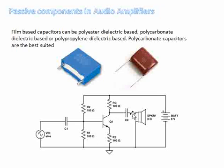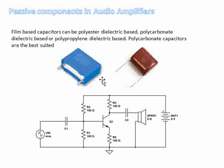A simple reason why ceramic capacitors are not used is because they vary their capacitance over voltage, which is not a desirable effect. That is why we see film capacitors used in audio amplifiers for coupling. Especially polycarbonate capacitors suit best when it comes to coupling caps used in audio amplifiers. These are very important points to consider while designing an audio amplifier circuit.